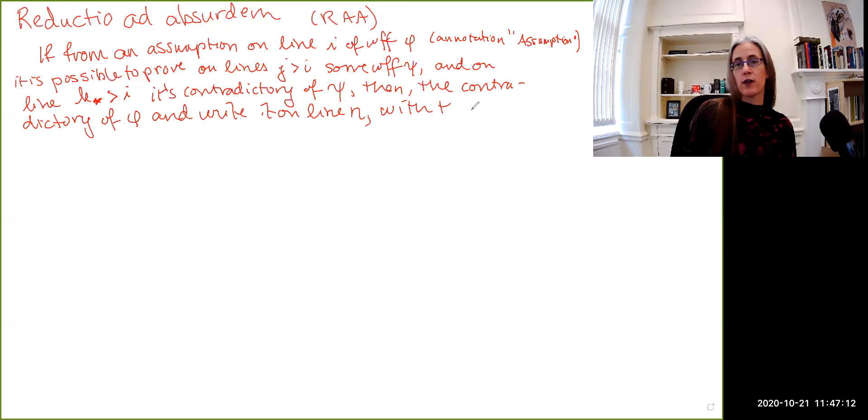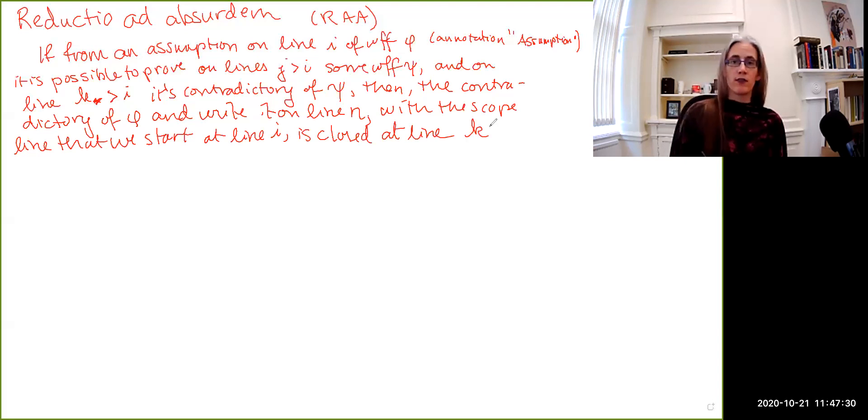And the scope line that we start at the initial assumption at line i, is going to be closed at line k. So, the annotation for this entire hypothetical move, we'll cite the entire little hypothesis all the way down to the second pair of our contradiction, and these lines from i to k will be called a sub proof, so it's like a proof embedded within a proof.